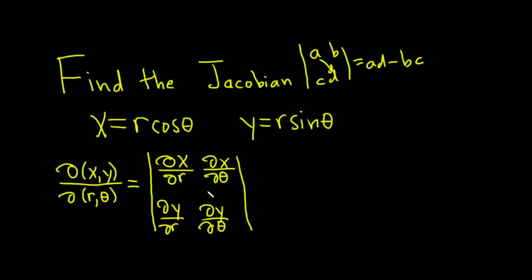So if we were doing that here, you would multiply these. So it would be del x del r times del y del theta. And then minus, and then you would do del x del theta times del y del r.